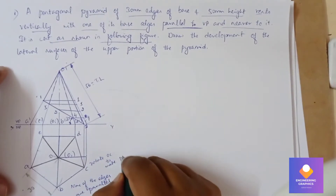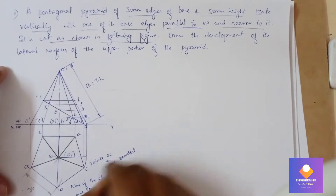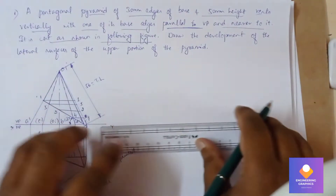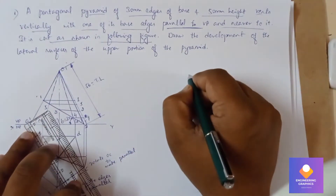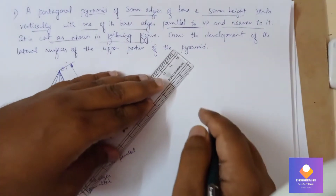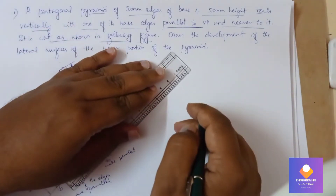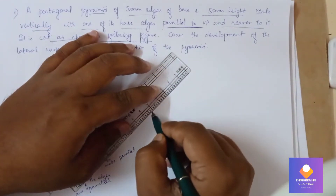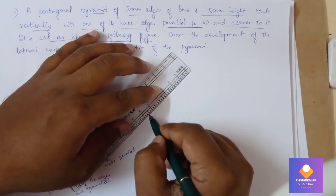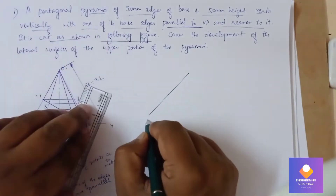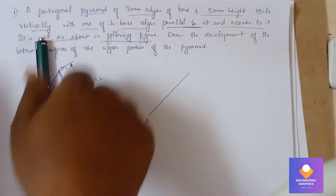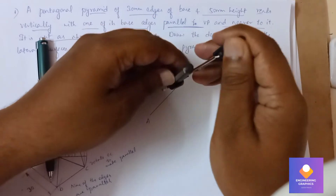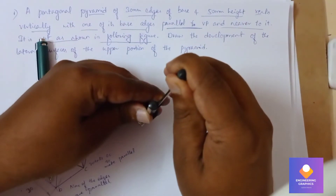In this problem we have made OC parallel and then projected it, getting the new true length. The true length is 56mm. Now take a compass and draw a curve or an arc.